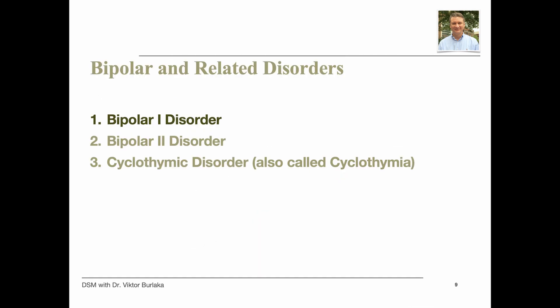Bipolar 1 disorder is defined by manic episodes that last at least 7 days, or by manic symptoms so severe that the person needs immediate hospital care. Depressive episodes also typically occur, lasting at least 2 weeks. Episodes with mixed features — having depressive and manic symptoms simultaneously — are also possible. Bipolar 2 disorder involves a pattern of depressive episodes and hypomanic episodes, without the full-blown manic episodes typical of Bipolar 1. Cyclothymic disorder, also called cyclothymia, is defined by periods of hypomanic and depressive symptoms lasting at least 2 years for adults and 1 year for children and adolescents, though the symptoms do not meet full diagnostic requirements for hypomanic or depressive episodes.